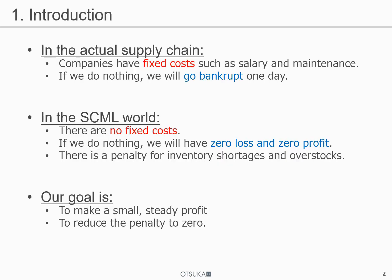Now, let's talk about our basic idea. In the actual supply chain, companies have fixed costs such as salary and maintenance. If we do nothing, we will go bankrupt one day. However, in the SCML world, there are no fixed costs. So if we do nothing, we will have zero loss and zero profit. In other words, the final score is zero.